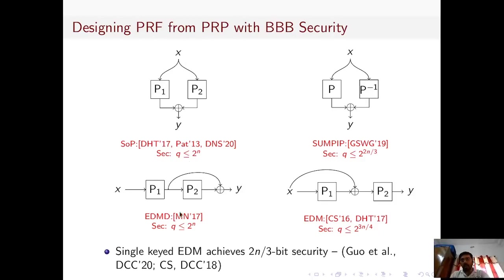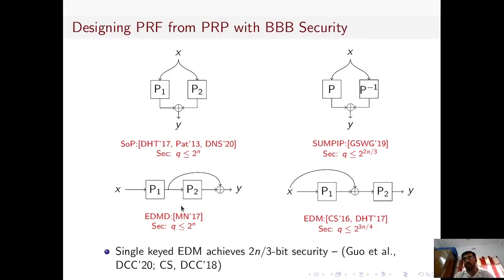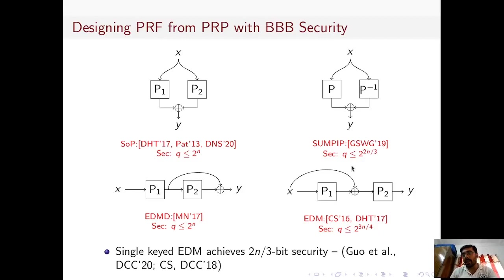The other construction, which we call the EDMD construction, is again based on two independent permutations, but it is a sequential construction. This construction was proposed in Crypto-17 by Mennink and Nies, and they showed it achieves optimal security. The Sum of P and P-inverse construction is a sum-of-permutations construction where, instead of two independent permutations, it is the sum of a permutation P and its inverse evaluated at a point x, and this construction has been shown to be secure up to 2^{2n/3} queries.